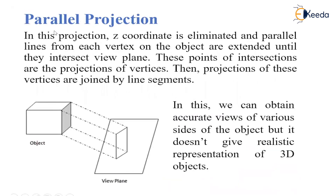First is the parallel projection. In this projection, the Z coordinate is eliminated and parallel lines from each vertex on the object are extended until they intersect the view plane. We have to convert the object into an image.